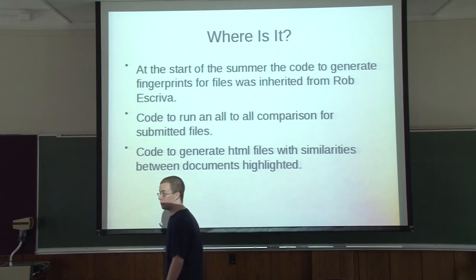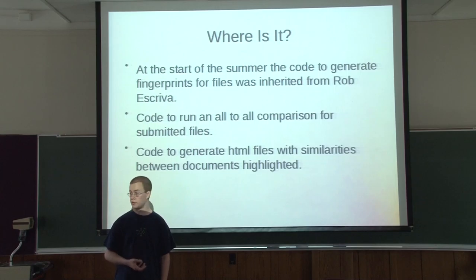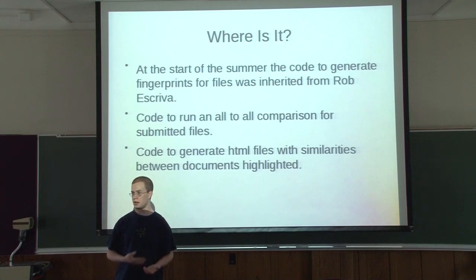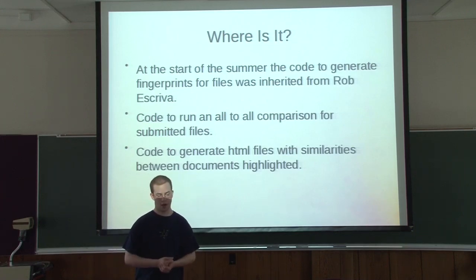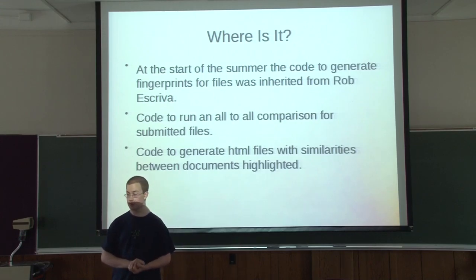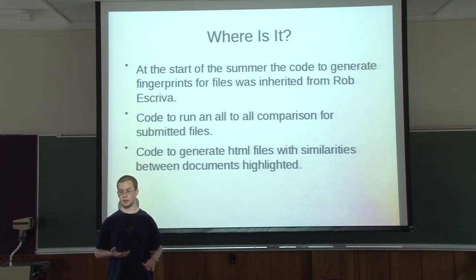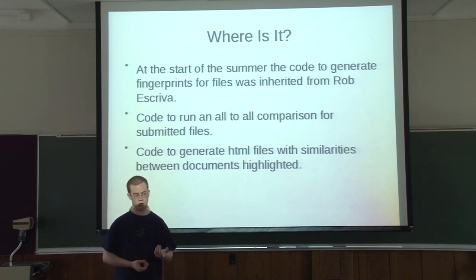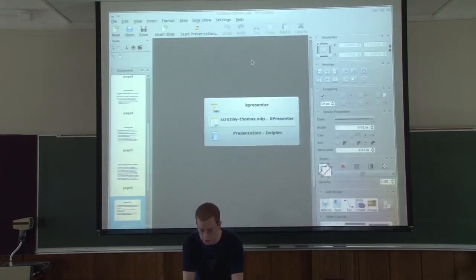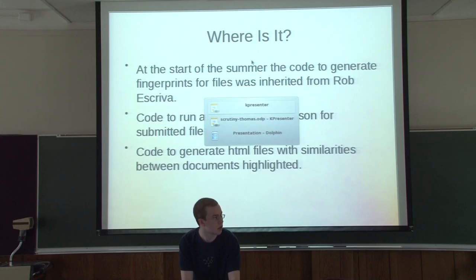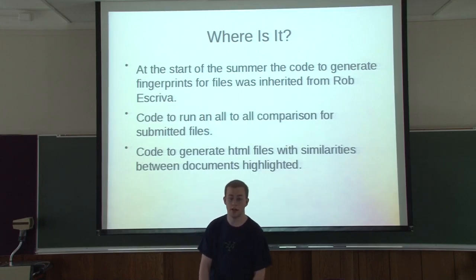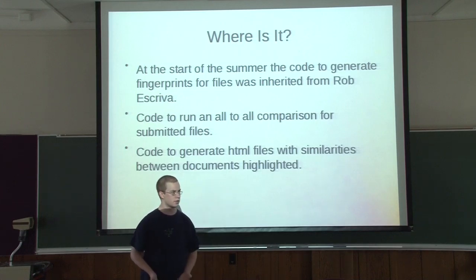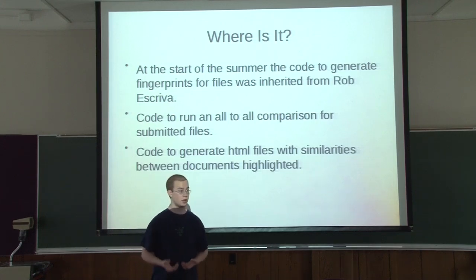So where is it right now? At the start of the summer, I inherited code from Rob Scriva, who had first envisioned this project. He gave code to basically generate a document's fingerprints — unique IDs for their code fragments. Since then, I have developed code to run comparisons against a submitted tar file of tar files so that student submissions can actually be checked against each other using the fingerprints, and then code to generate an HTML file that highlights those similarities. I actually want to show you what it looks like. You can tell who Rob Scriva is — he's actually a graduate from RPI.